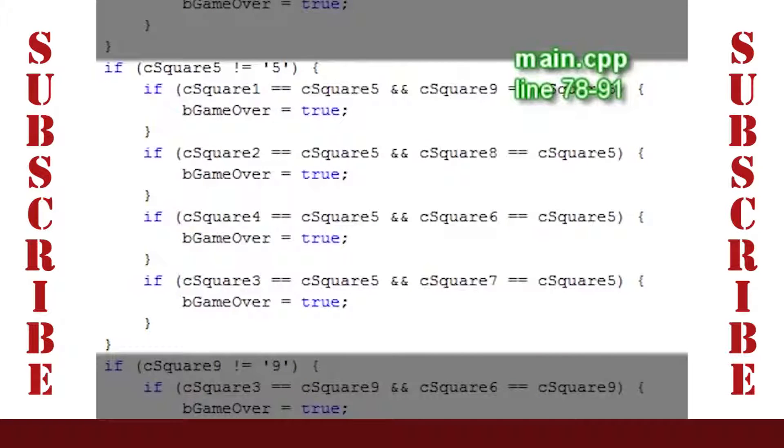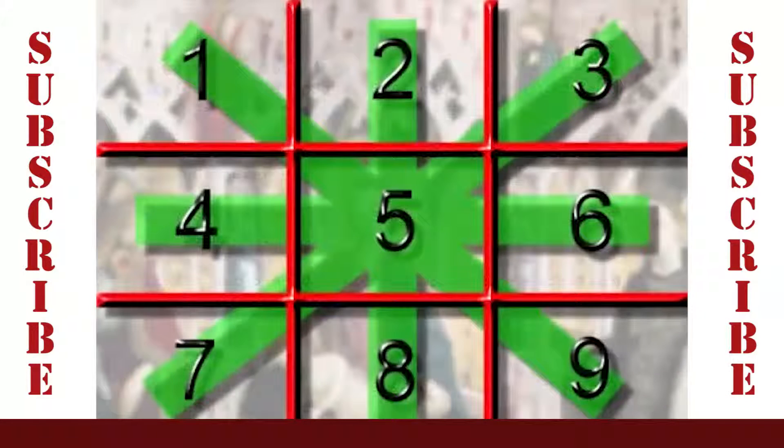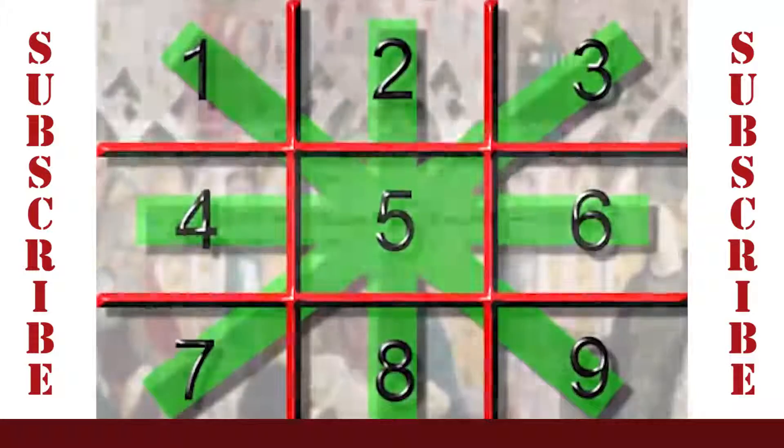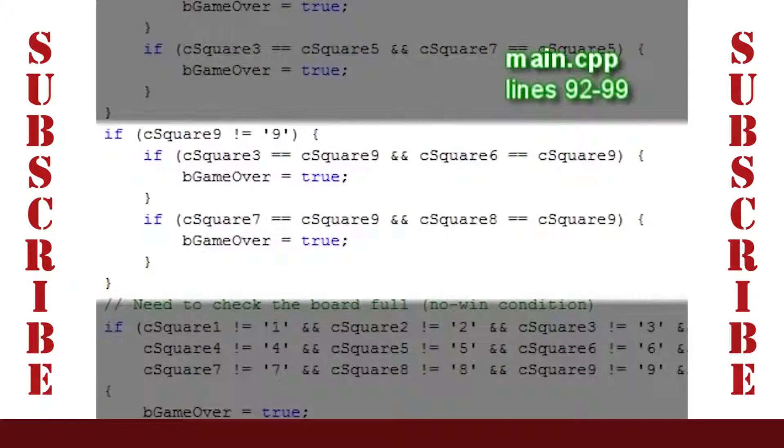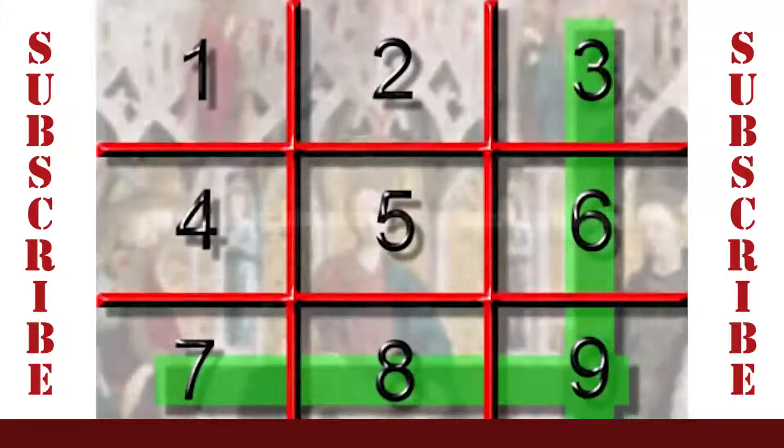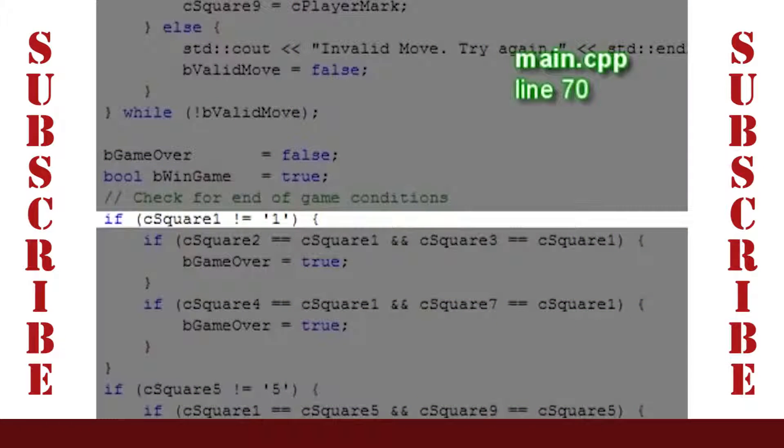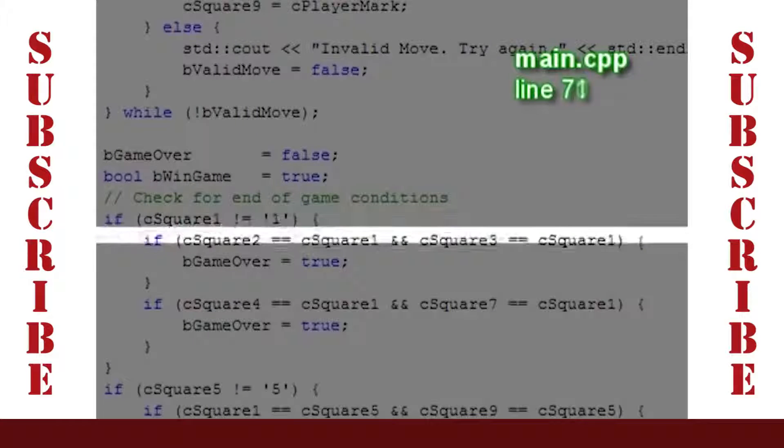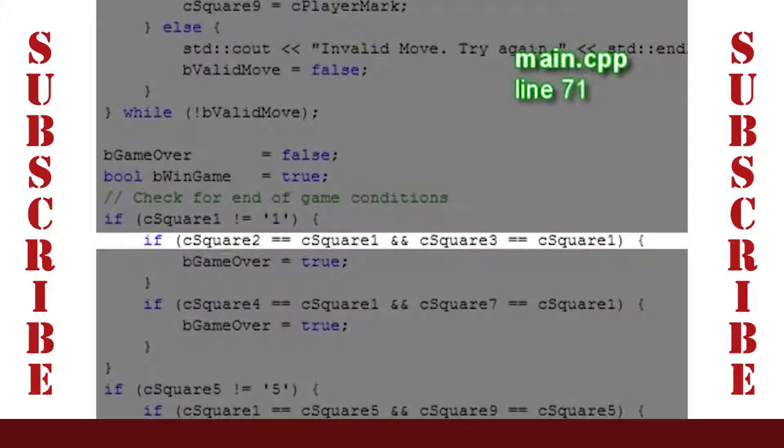The second if handles four cases through the middle square. The third if handles two cases through the ninth square. In each of these cases, we check that the square is not equal to its number character. This check ensures that we have an X or an O in this square. Then we check whether the other two squares in the series are the same as this one.